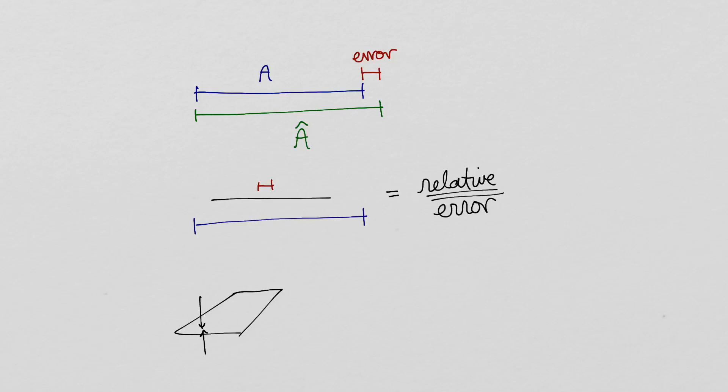For example, a difference of 50 micrometers is quite significant when you're talking about paper thickness, but it isn't important at all if you're measuring the height of a tower.